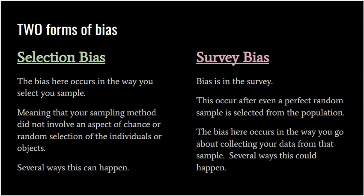There are two specific forms of bias: selection bias and survey bias. Selection bias occurs in the way you select your sample, meaning your sampling method did not involve an aspect of chance or random selection of the individuals or objects. Selection bias is any way where your selection method was not random or specifically does not represent the population like it should.